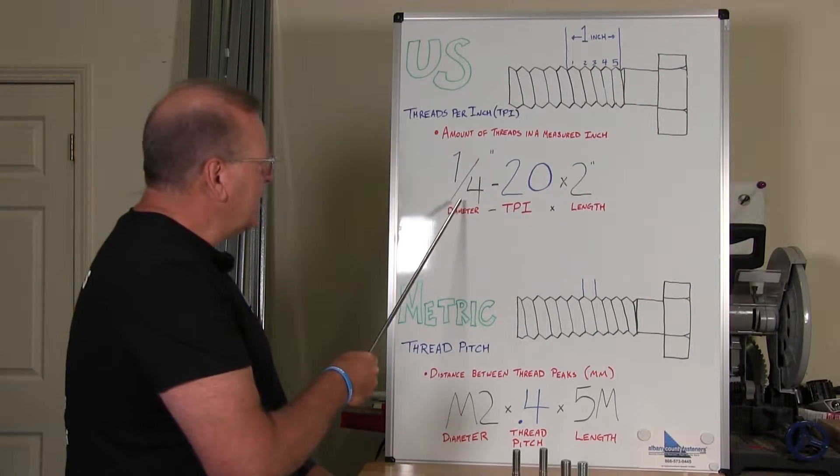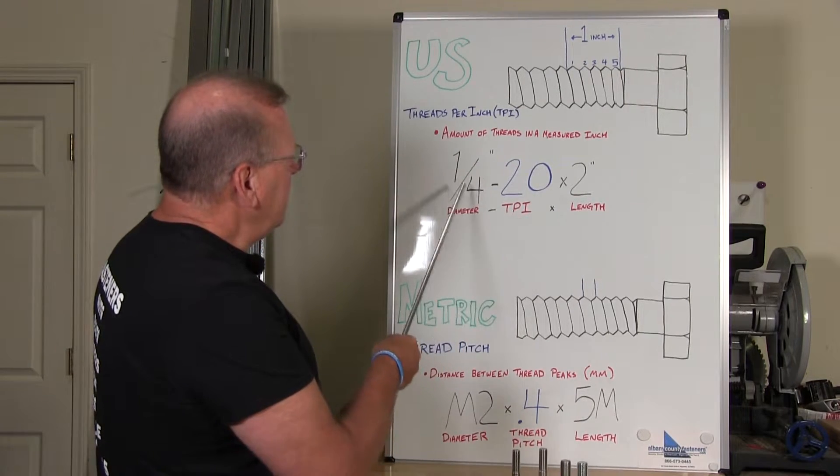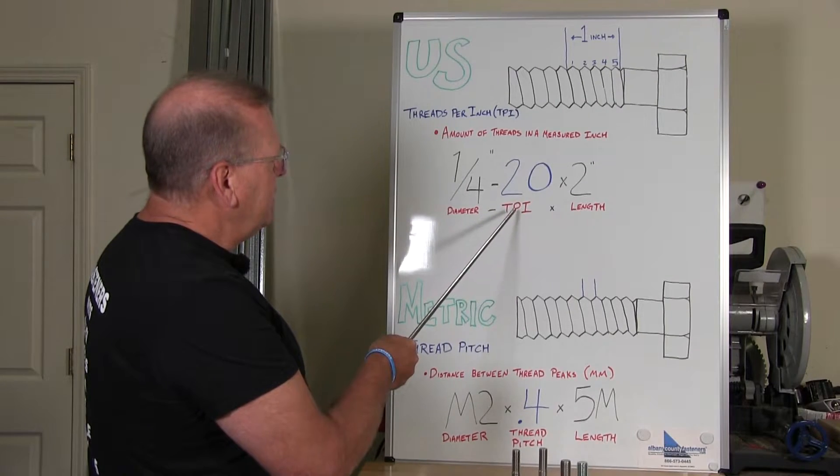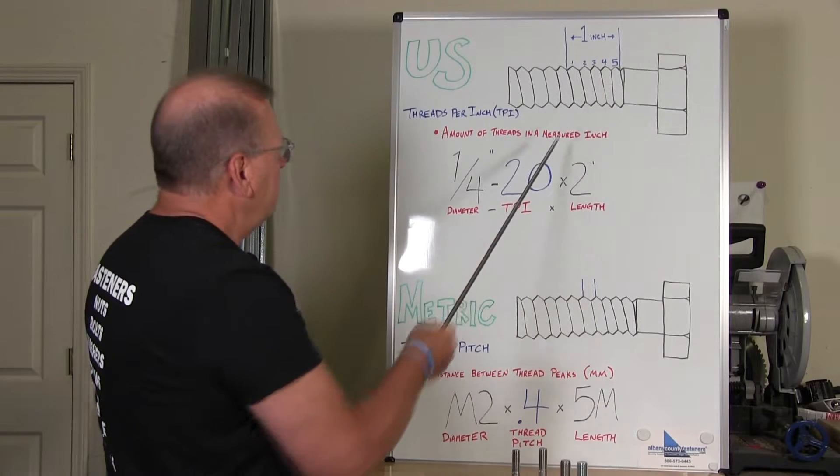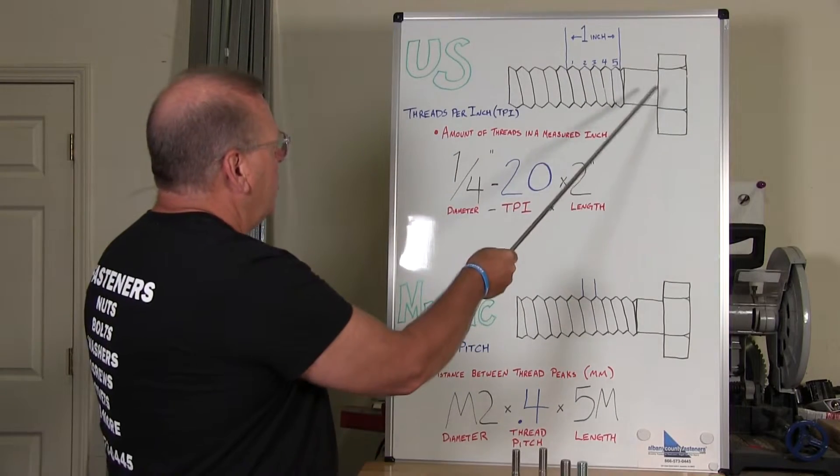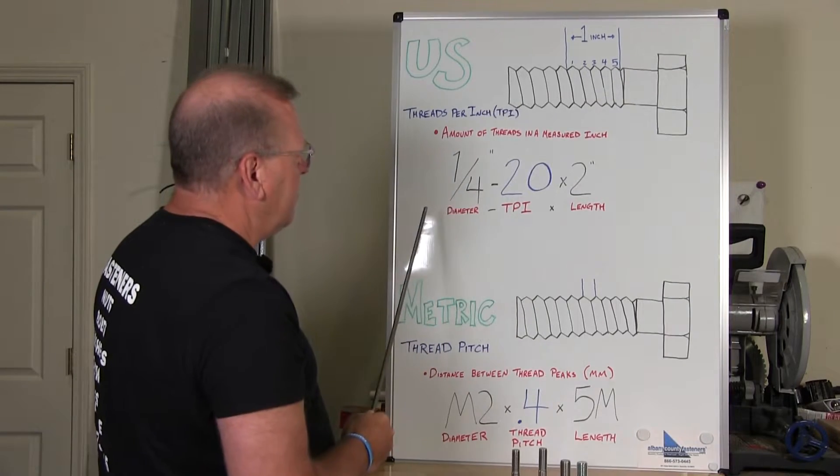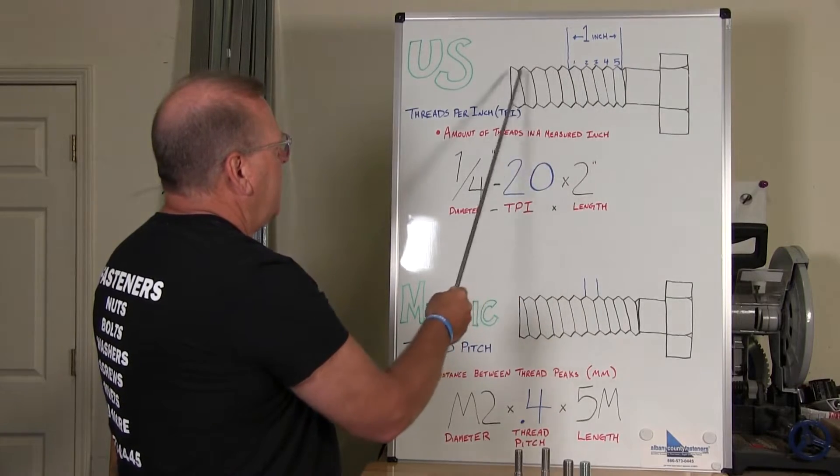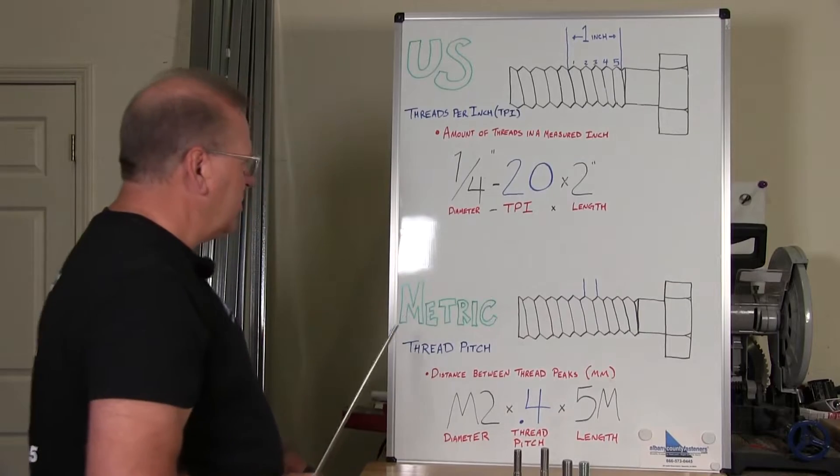So when you read a bolt that says quarter twenty by two, that means quarter inch diameter, twenty inches TPI that's threads per inch, and then two inches long. Two inches long would be from under the head to the end of the bolt. Whenever you have a full head like this it's always measured from under the head to the end of the bolt. So that's your threads per inch.